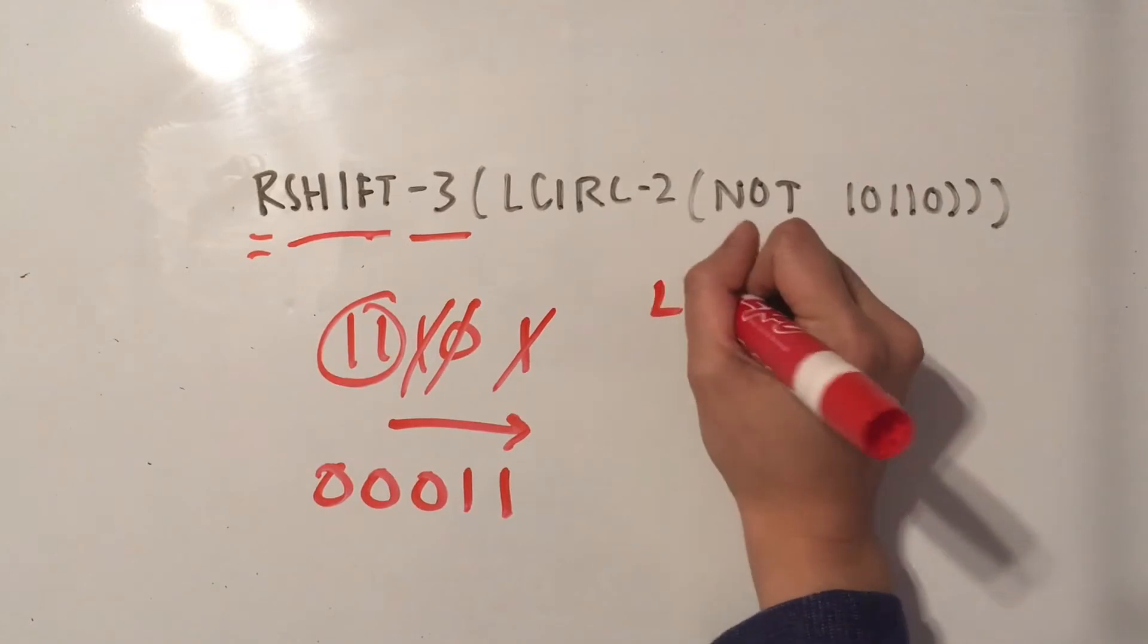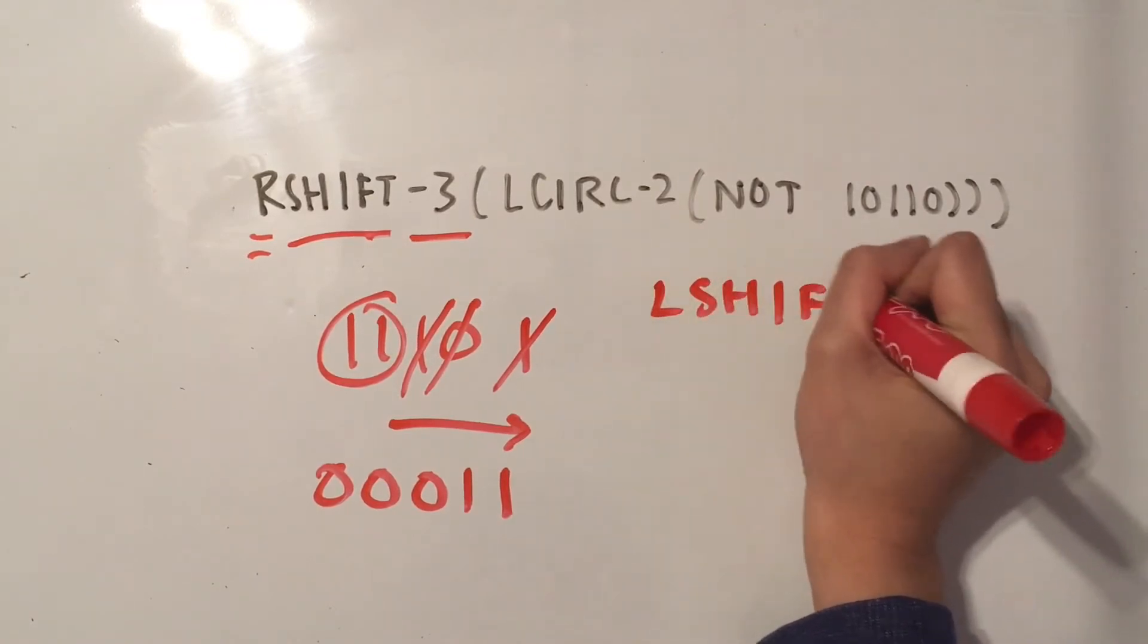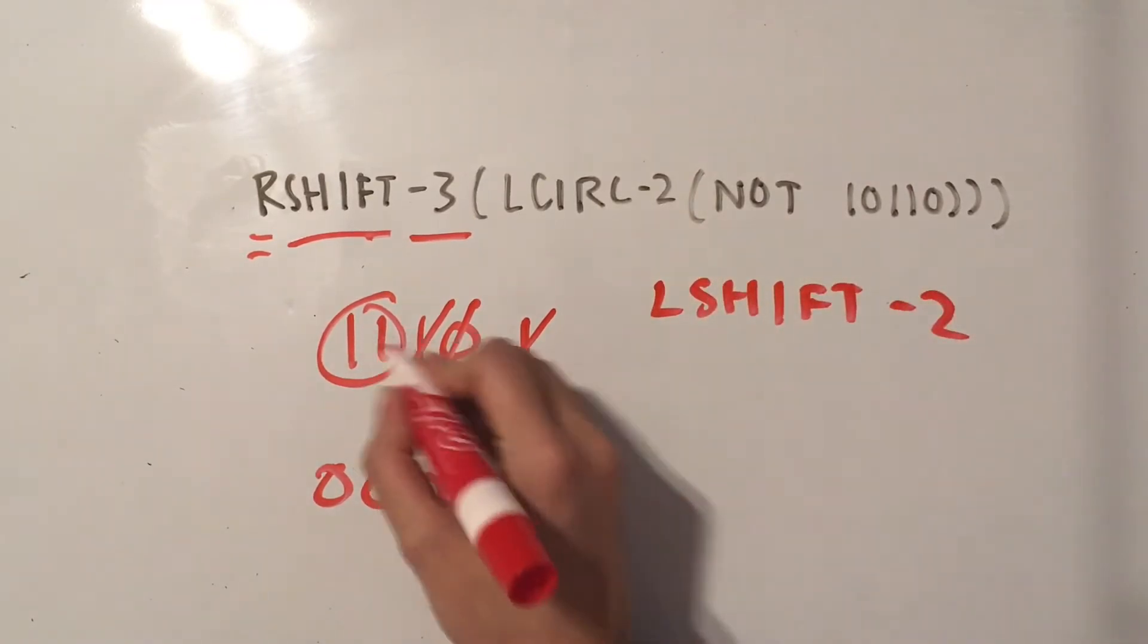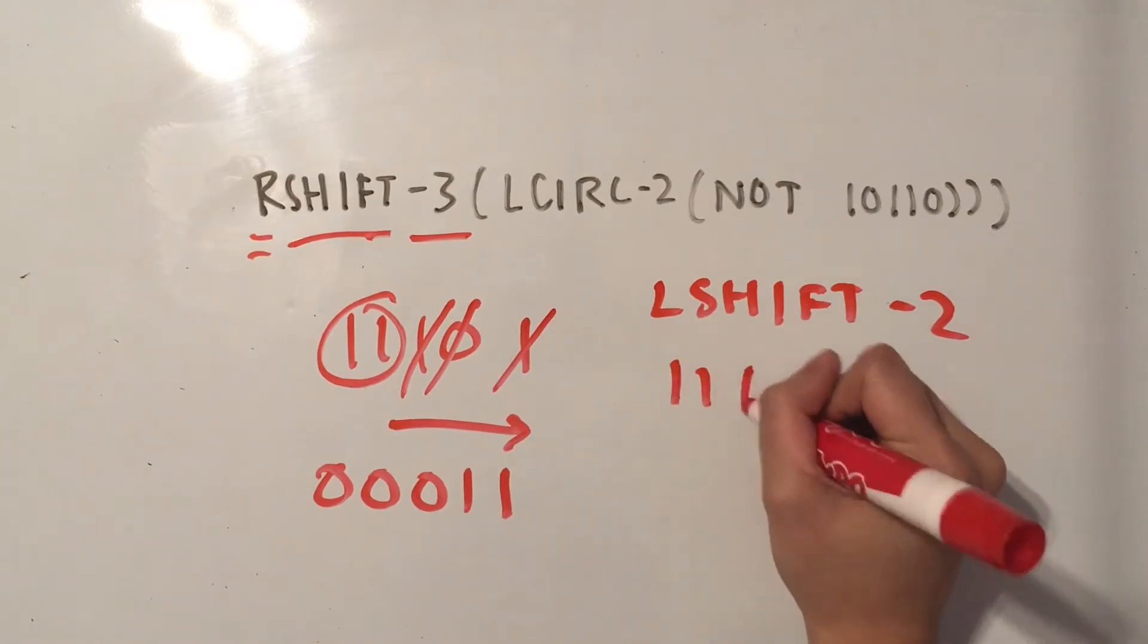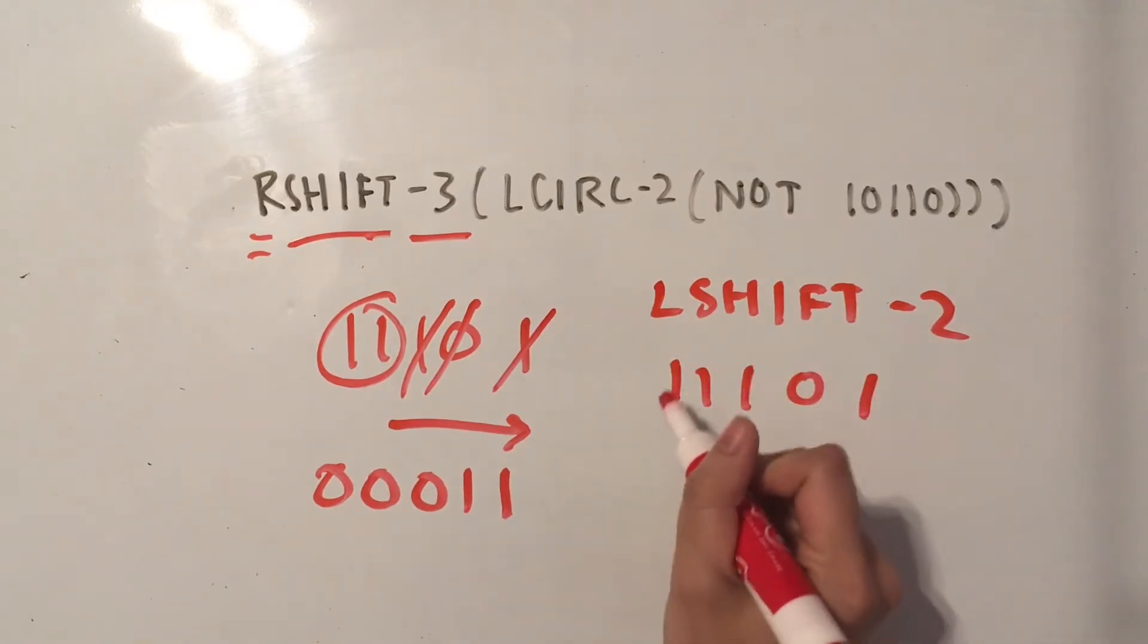Likewise, if we had L shift 2, then using the same number here, 11101, we'd start from the left.